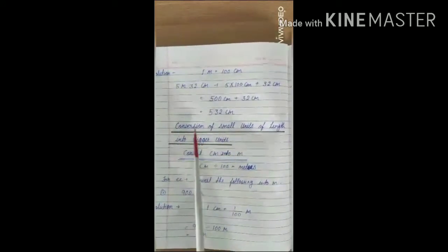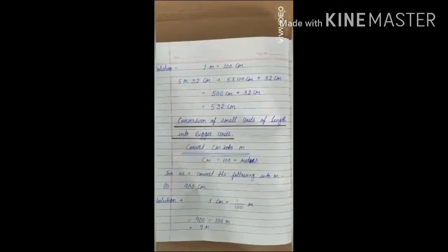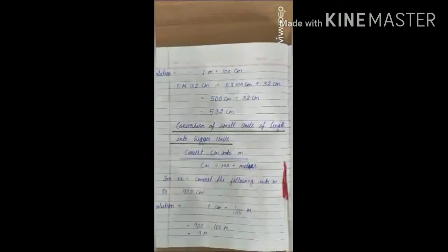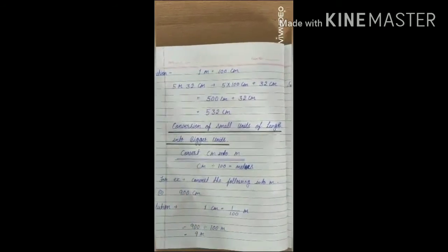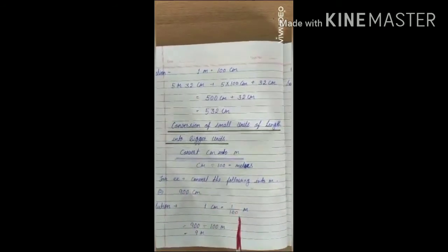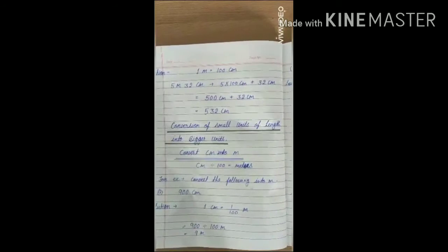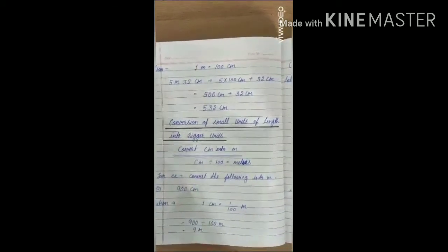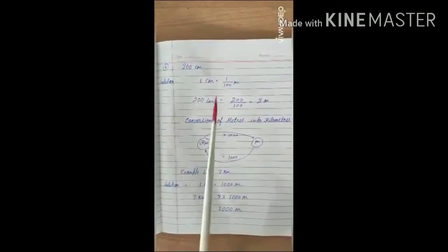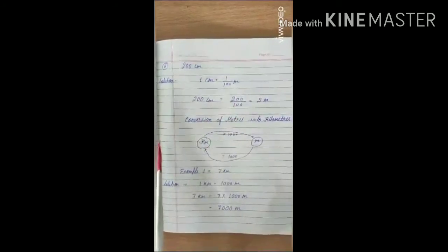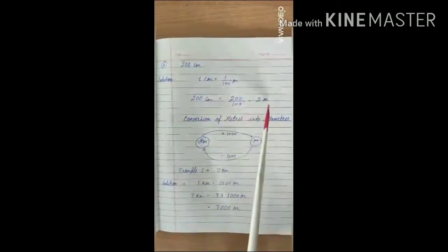Conversion of small units of length into bigger units — convert centimeters into meters. When we convert centimeters into meters, we divide by 100. For example, 900 centimeters divided by 100 equals 9 meters. For 200 centimeters: 200 divided by 100 equals 2 meters.